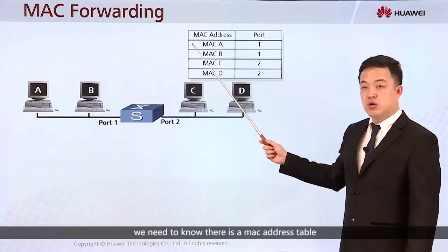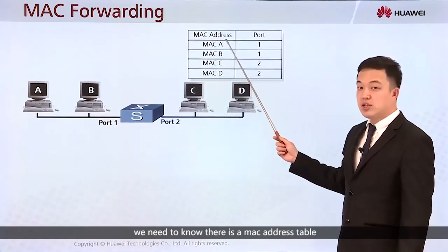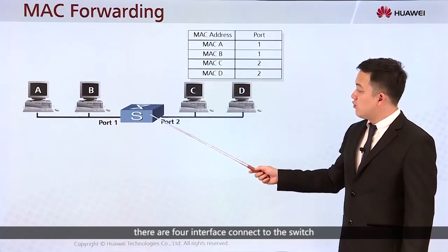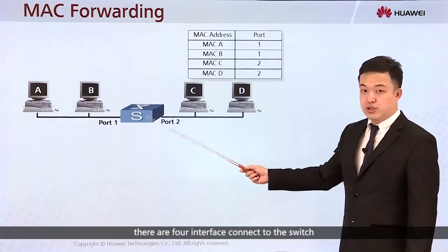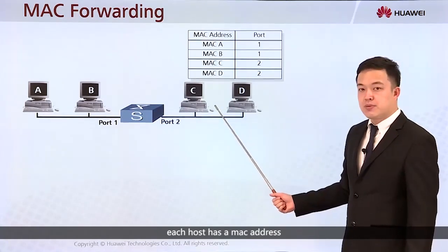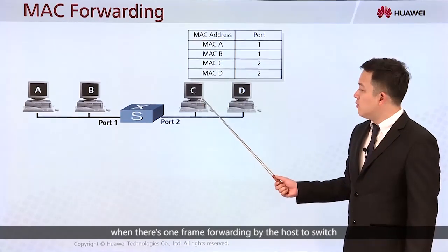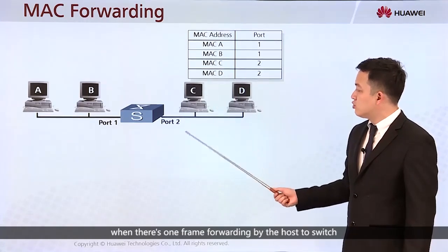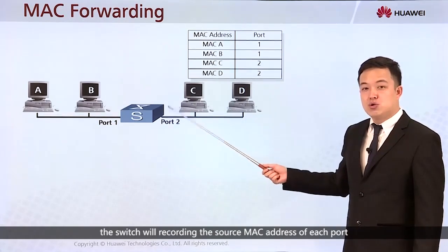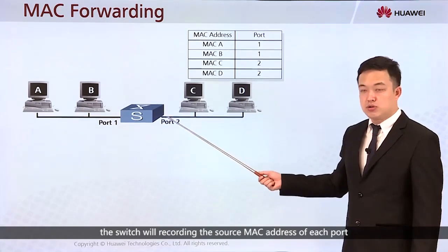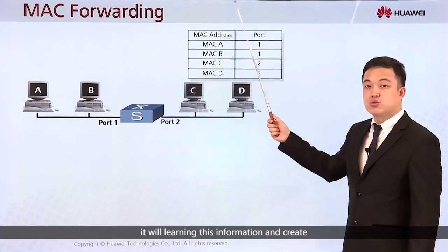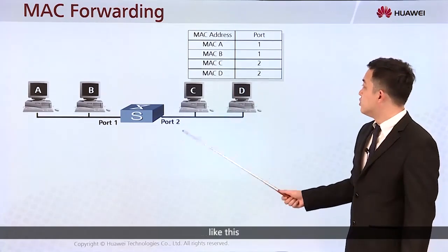When we talk about this, we need to know there is a MAC address table. In this topology, there are four interfaces connected to this switch. Each host has a MAC address. When a frame is forwarded by a host to the switch, the switch records the source MAC address of each port, learning this information and creating the MAC address table.